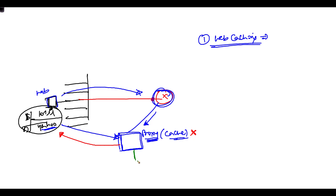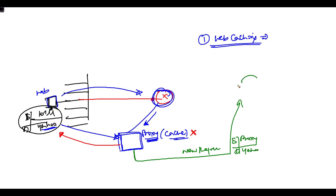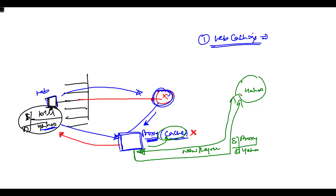A new request is initiated by the proxy, where the source address is the proxy and the destination is the Yahoo server. Yahoo sends the web page back to the proxy, which stores it in the cache. If any other user tries to access the same page, it doesn't need to route over the internet again — it is sent back directly from the proxy.